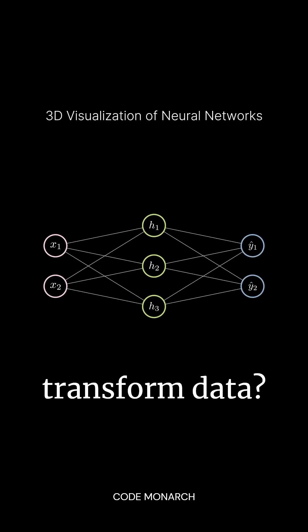Do you know how neural networks transform data? Here's how. Consider a neural network with two input neurons, a hidden layer of three neurons, and two output neurons.